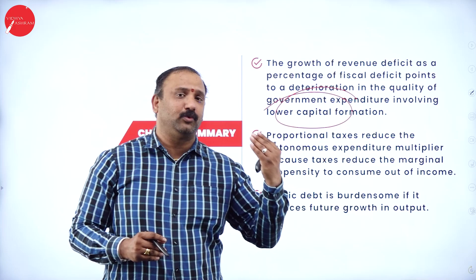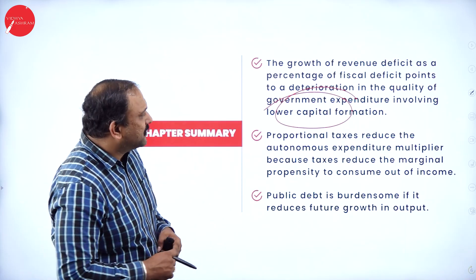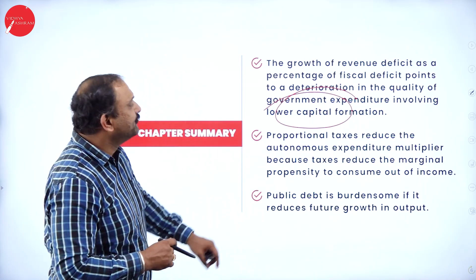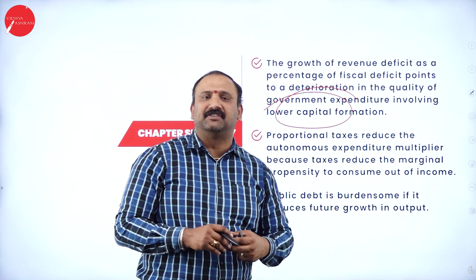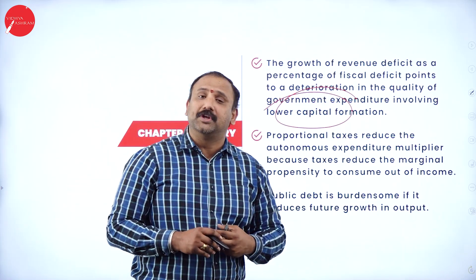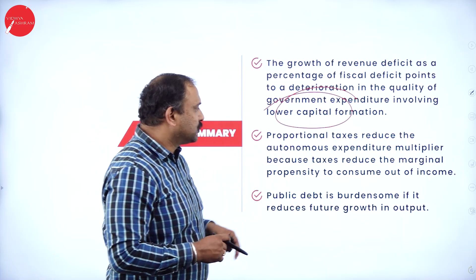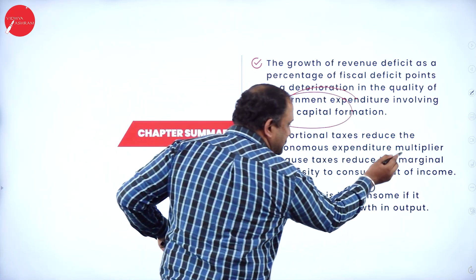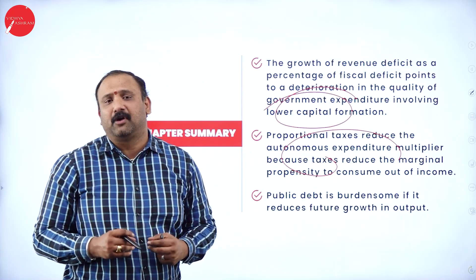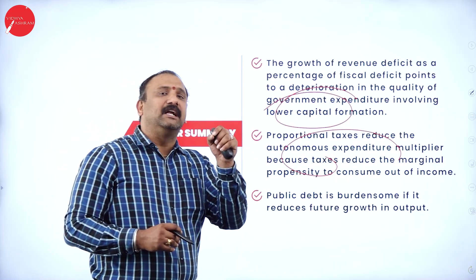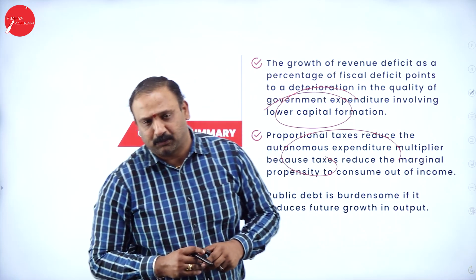There might be areas where the government expected to make a certain amount of money but has not got it, so all those factors may be considered as shortcomings altogether. We also talk about proportional taxes, autonomous expenditure, the multiplier, and tax factors. Proportional taxes are a part of the autonomous expenditure multiplier because taxes will reduce the marginal propensity to consume from income. So more the taxes, the income automatically reduces, which means the consumer will not be able to consume at the same levels as before.